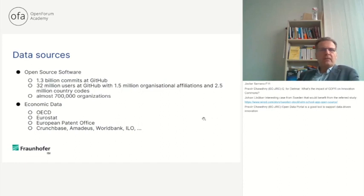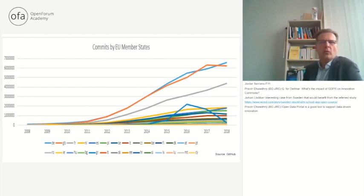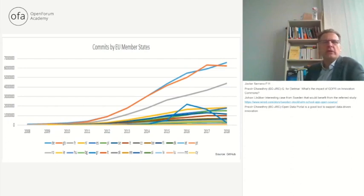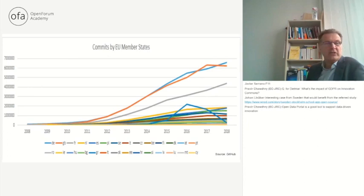This is the development of the commits between 2008 and 2018 — that was the last year we could look at — and overall we see this is going up in all our member states. There are some special issues for Greece, some artificial changes, but even if we take these out the results are quite robust. In 2019 there was a data problem because we took data from GH Torrent from Dallas University, but looking at 2020 we still have an upward trend.